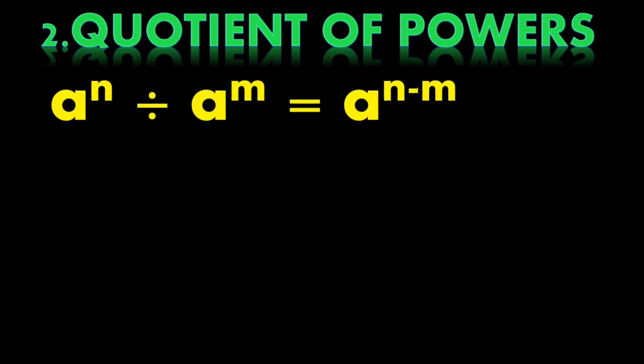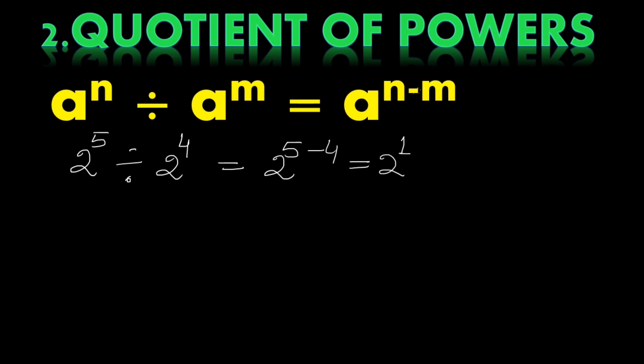Next is the Quotient of Powers. When we divide with the same base — exponents may be different or the same — we just subtract the exponents. For example, 2 raised to the power 5 divided by 2 raised to the power 4 equals 2 raised to the power 5 minus 4, which equals 2 raised to the power 1, that is equal to 2.